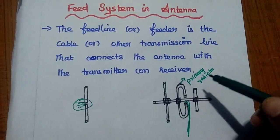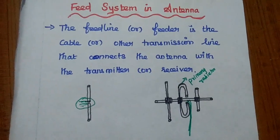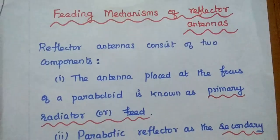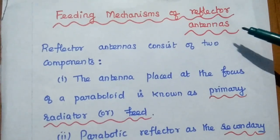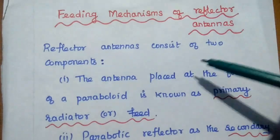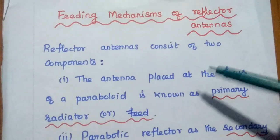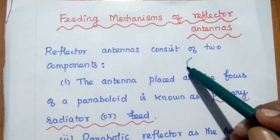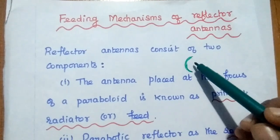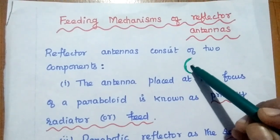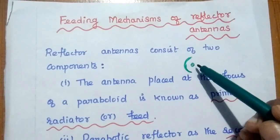The primary radiator is also called an active element. Now we are going to discuss the feeding mechanisms of reflector antennas. Reflector antennas consist of two components: one is the reflector, that is the parabolic reflector, and the other is the active component called the primary radiator.